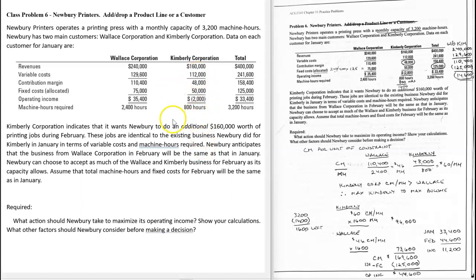The variable costs are $112,000 and the machine hours required are 800. So now the revenue would double, the variable costs would double, the contribution margin would double, and the machine hours required would also double. The allocated fixed costs would stay the same. Newberry anticipates that business from Wallace in February will be the same as January. Newberry can accept as much of the Wallace and Kimberly business as capacity allows — they cannot add capacity, so they have a monthly capacity of 3,200 machine hours.